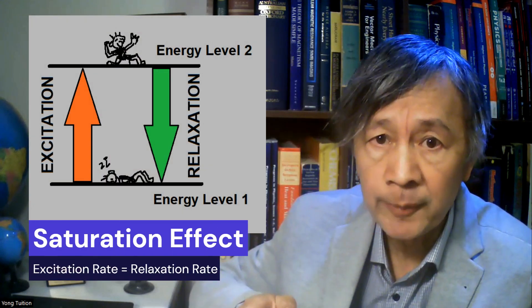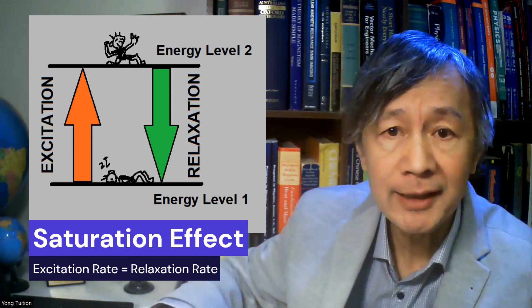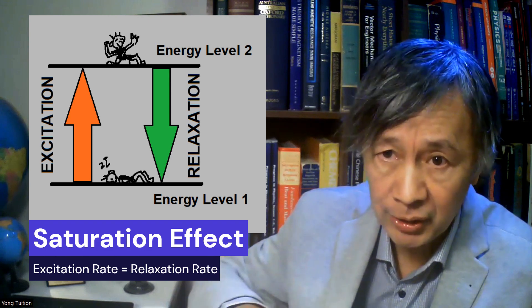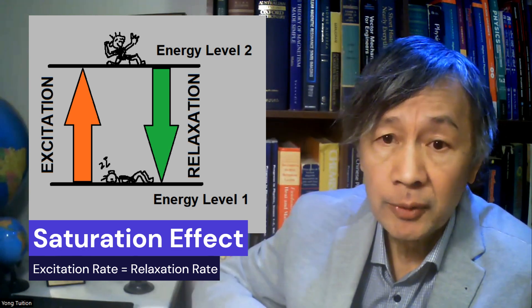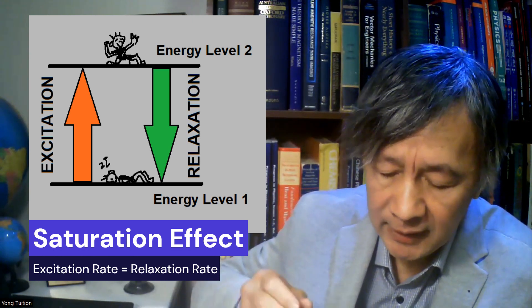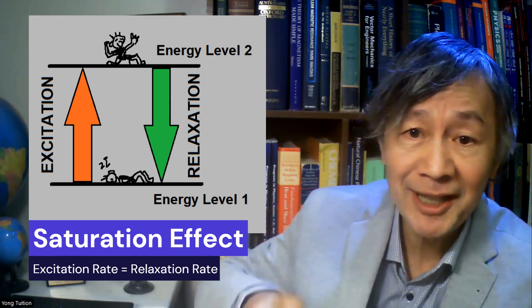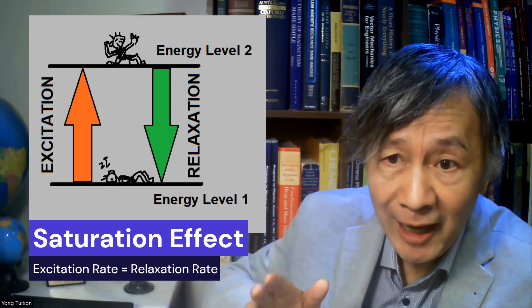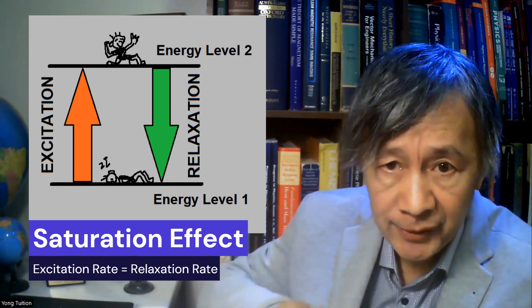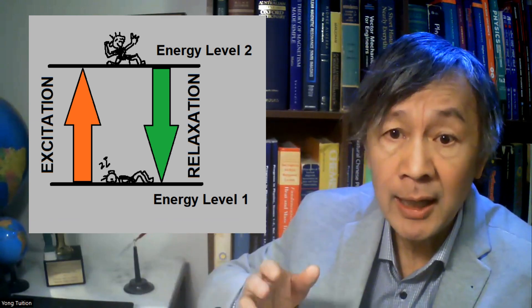By definition, saturation effect in spectroscopy refers to when the rate of an external resonant excitation between two energy levels of the atom or a molecule becomes close to the rate of the relaxation. For CO2 molecules in the atmosphere, the relaxation process can be achieved either by spontaneous emission or by radiation heating — making the molecules around warmer. They have to relax because they absorb infrared radiation. As a result, CO2 molecules are in the so-called excited state.